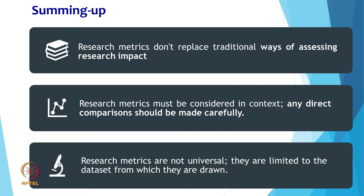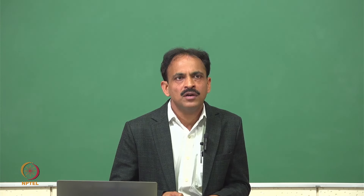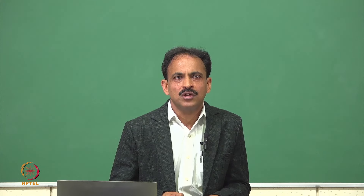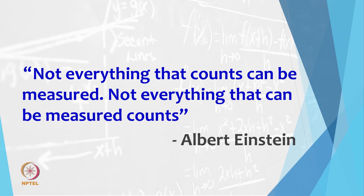In summary, research metrics do not replace traditional ways of assessing research impact such as peer review, research funding, and practical application — they simply provide additional data to make impact assessment more accurate and meaningful. Research metrics must be considered in context; any direct comparison should be made carefully, as the researcher's field of study and career length greatly affect citations and attention received. Research metrics are not universal — they are limited to datasets from various platforms, and different metrics track different data. As Albert Einstein rightly said, 'Not everything that counts can be measured, and not everything that can be measured counts.'